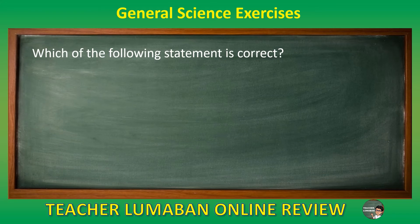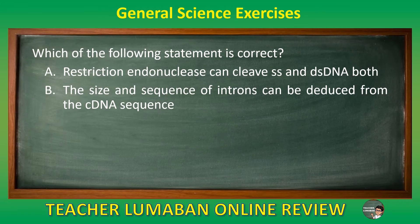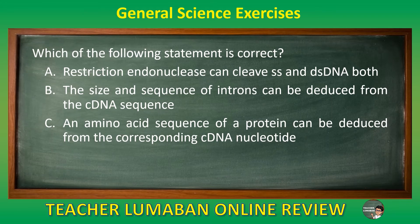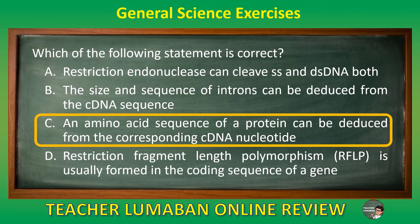Which of the following statements is correct? Letter A restriction endonuclease can cleave SS and DS DNA both. Letter B the size and sequence of introns can be deduced from the cDNA sequence. Letter C an amino acid sequence of a protein can be deduced from the corresponding cDNA nucleotide. Letter D restriction fragment length polymorphism is usually formed in the coding sequence of a gene. The correct answer is letter C: an amino acid sequence of a protein can be deduced from the corresponding cDNA nucleotide.